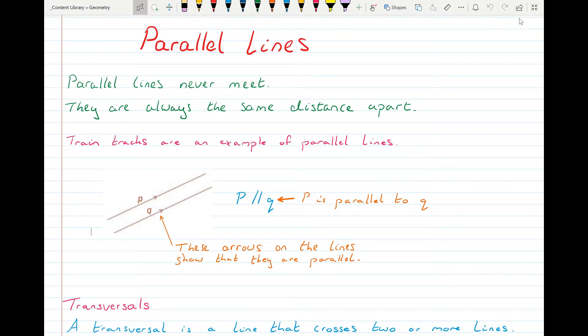Train tracks are a good example of parallel lines. The yellow lines at the side of the road, if someone's double parking, they're a good example of parallel lines. They're everywhere really. If you look around even the room you're in now, you'll see lots of parallel lines.